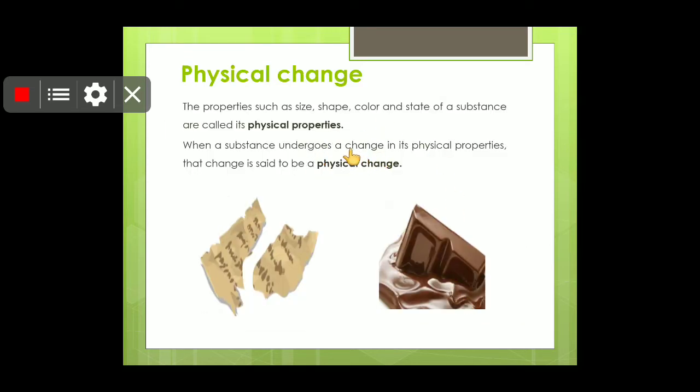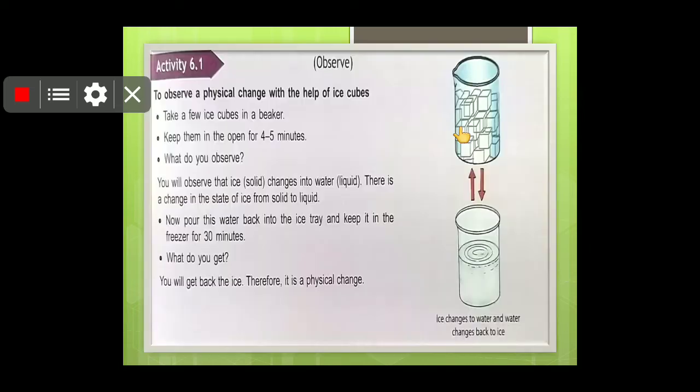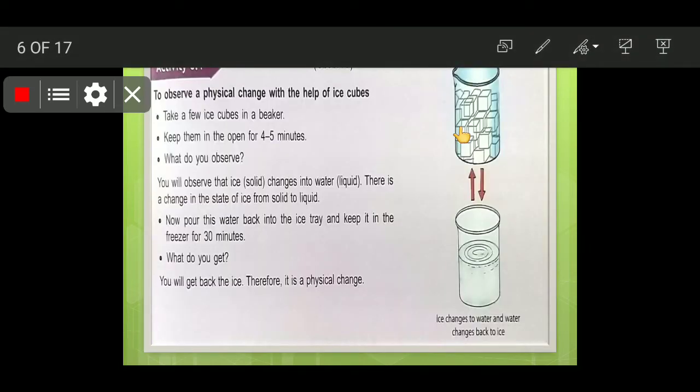So physical changes are the changes in which size, shape, color, state of the substance is changed. Only size, shape, color and state of the substance. When a substance undergoes a change in its physical properties, that change is said to be a physical change. So here are a few examples that we have already discussed.